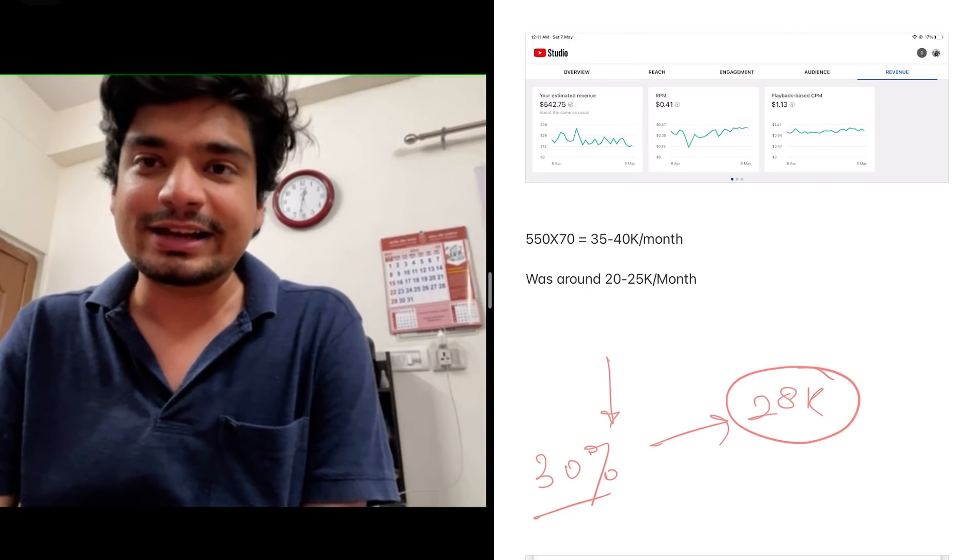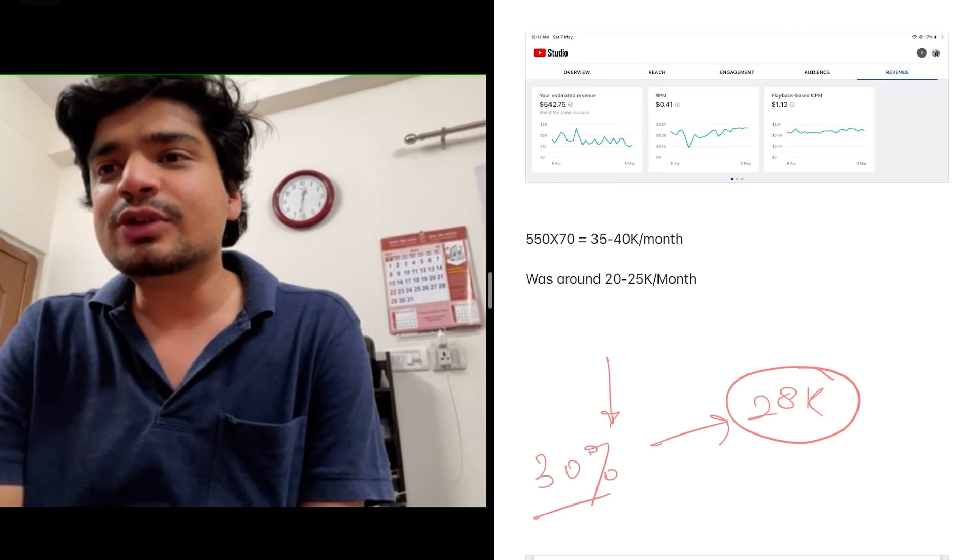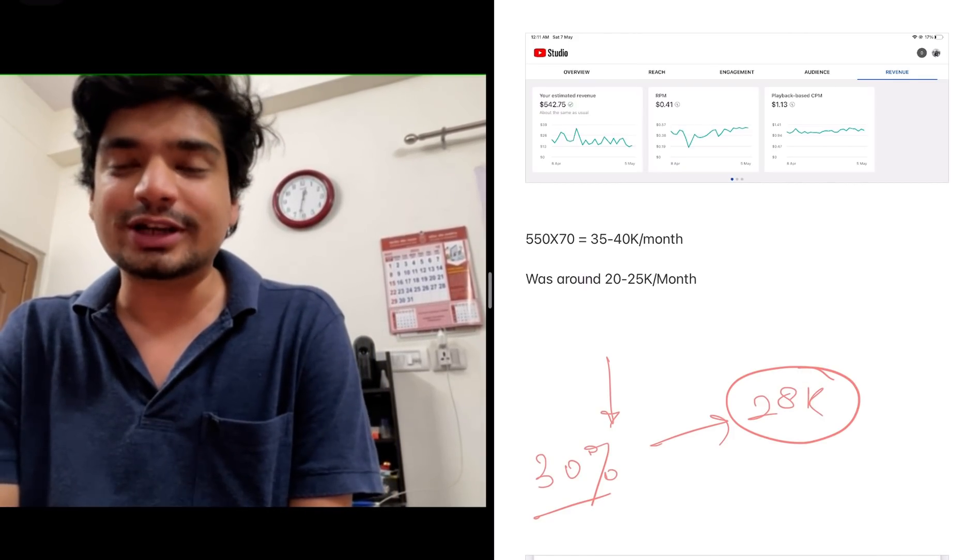So $550 approximately, let's consider that our dollar is now trading around 70-75 rupees. So per month, what I'm making from YouTube is around 35 to 40,000 rupees.